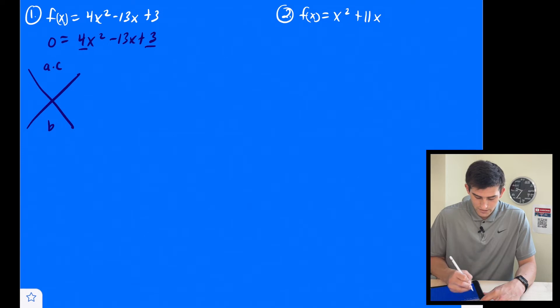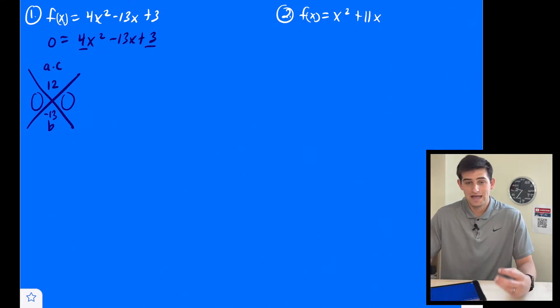So a is 4, c is 3. So that would be 12. And then b is negative 13. So now on the sides of my x here, I want to write two numbers that add to negative 13 and multiply to 12.